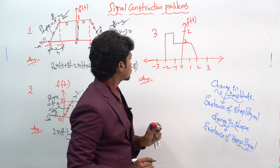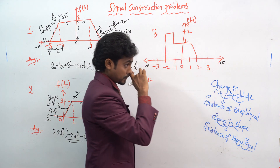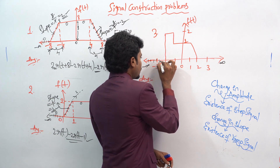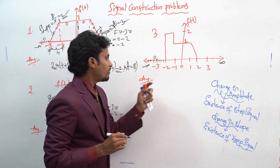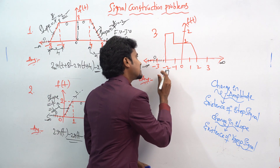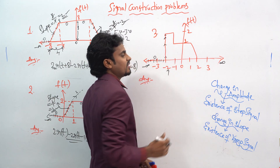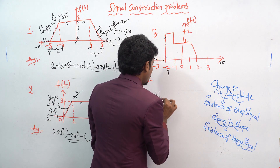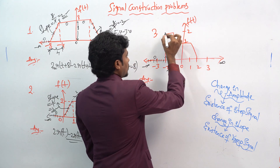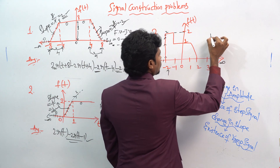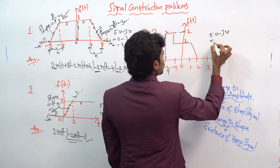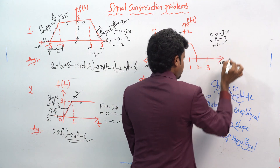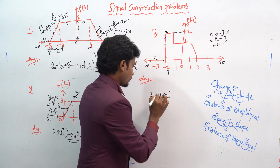For the third question: from minus infinity to minus 2 you cannot find any signal, so that is zero. Whenever you see t = −2, there is a drastic increase in the amplitude. Whenever you see a drastic change in amplitude, there is an existence of a step signal. You write this as u(t + 2). The magnitude is final value minus initial value: 2 minus 0 = 2, giving 2·u(t + 2).